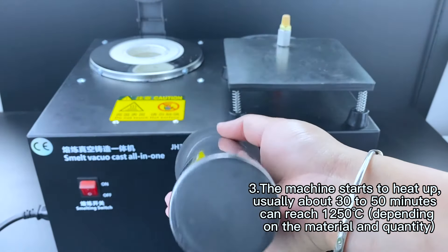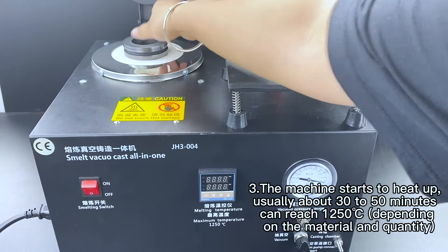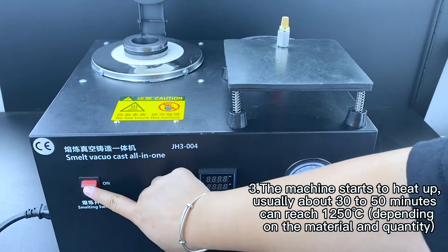3. The machine starts to heat up, usually about 30 to 50 minutes, can reach 1250°C depending on the material and quantity.